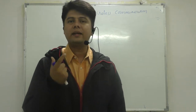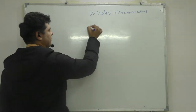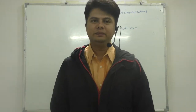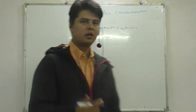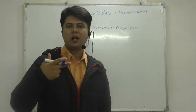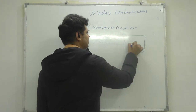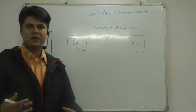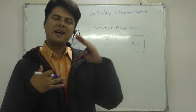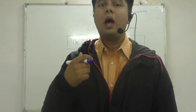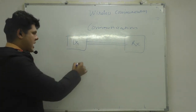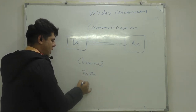We have two kinds of communication. Communication means the transferring of data. We have two systems: the first one is the transmitter, called TX, and we have another system called the receiver, RX. To connect transmitter to receiver, we use a channel, a path, or a link — these are all synonyms for the communication link.